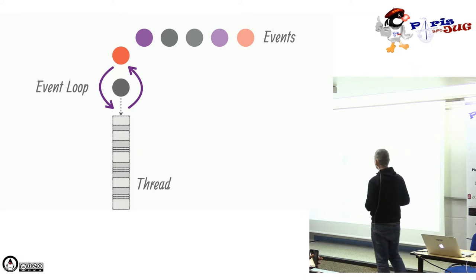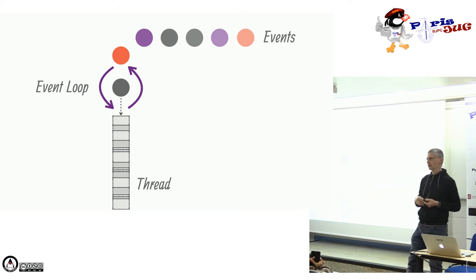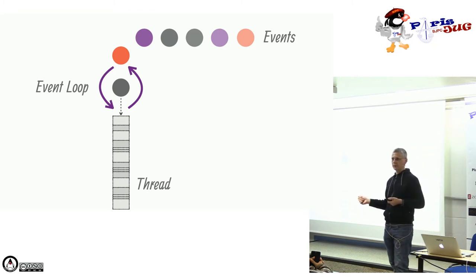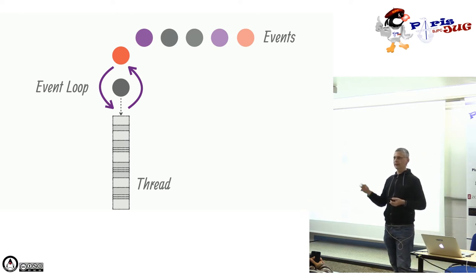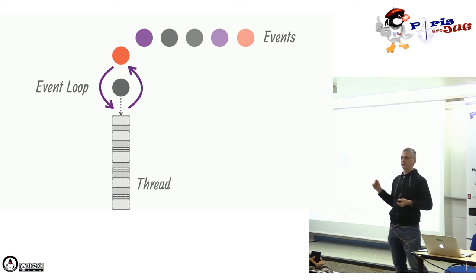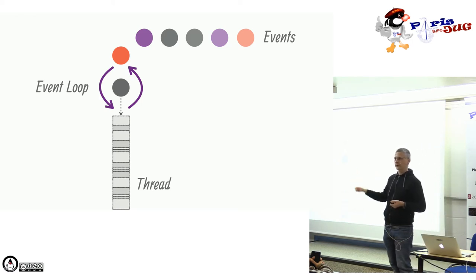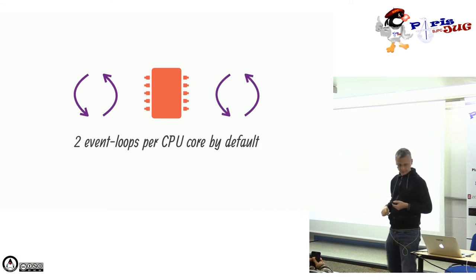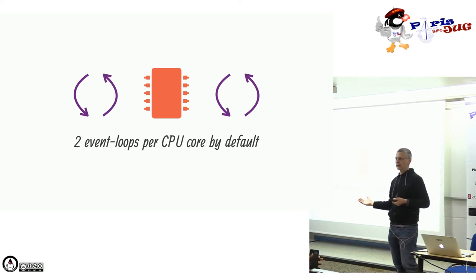On travaille avec le système d'EventLoop. C'est un thread qui tourne avec une queue de tâches. Des événements s'y rajoutent : par exemple, un client arrive, une requête HTTP est mise dans la queue, elle est dépilée et exécutée. Si l'application accède à la base de données, ça crée de nouvelles tâches ajoutées dans la queue. Vert.x fournit par défaut deux EventLoops par CPU, soit 16 EventLoops sur un CPU 8 cœurs.